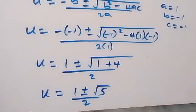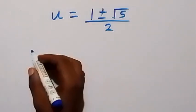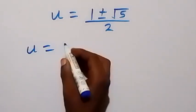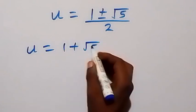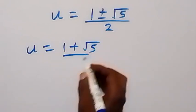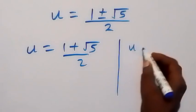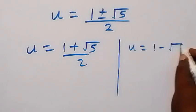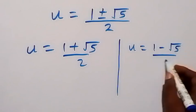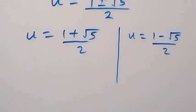So we have two possible values of u. First, u equals (1 plus root 5) over 2, and second, u equals (1 minus root 5) over 2. We should recall that we represented u as (11/4) raised to power x.